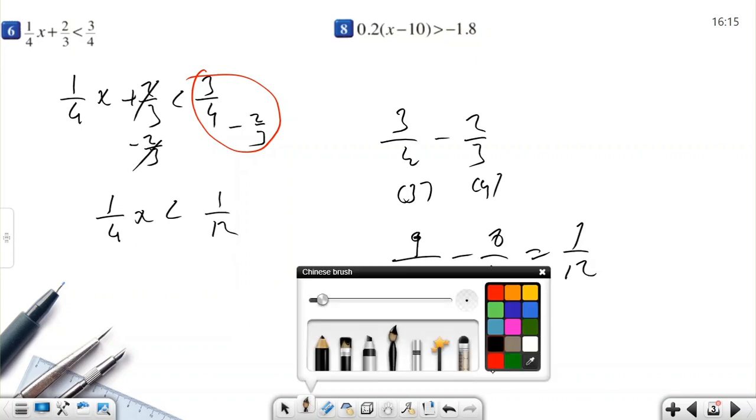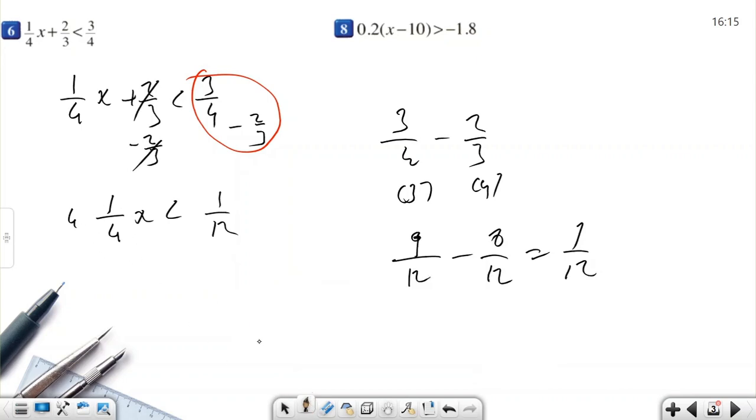So I get 1 over 4x. If I multiply both sides of the inequality by 4, 4 divided by 4 is 1. Only x is here. Less than 4 and 12. If you simplify by 4, 1 and 3. 1 times 1 is 1 over 3.